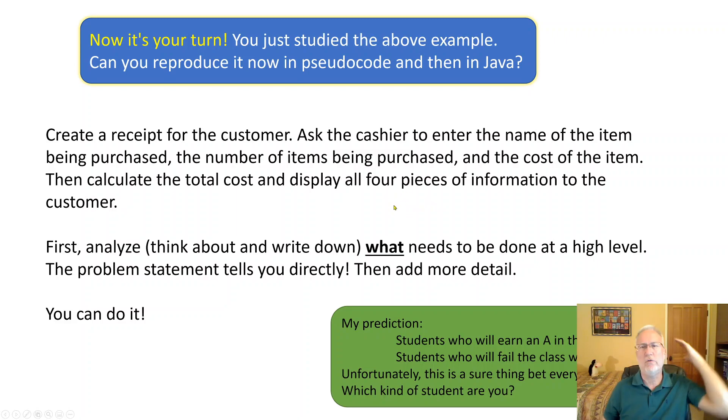And successful students don't let things wash over them. They grab it. They understand it. They understand the concept. So here's the problem statement. Create a receipt for the customer, et cetera. Three items coming in, four items being displayed out. One processing, right? So think about what needs to be done, put in pseudocode and then add more detail. So you do it.